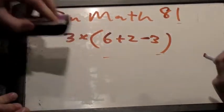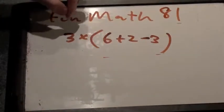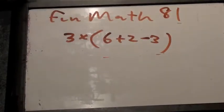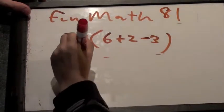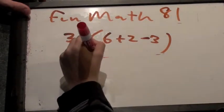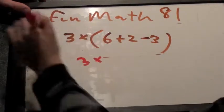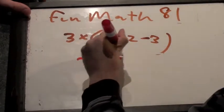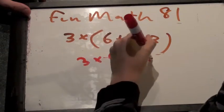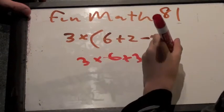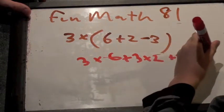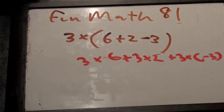But we can also distribute the 3 inside the parentheses. And we get what? We get 3 times... Well, we get 3 times 6. Right. 3 times 6. Plus 3 times 2. Plus 3 times minus 3. Okay, so the 3 hits everything in the parentheses.